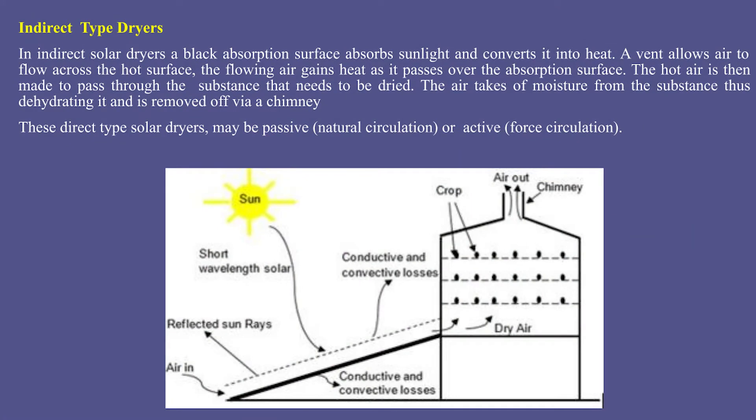The indirect type solar dryers may also have passive (natural circulation) or active (forced circulation) modes. In this diagram, you can see that solar energy falls through the glass onto the absorber surface, which gets heated. Air entering from the bottom of the plate is heated by heat transfer from the plate, and this hot air enters the chamber where the crops are placed and gets dried.